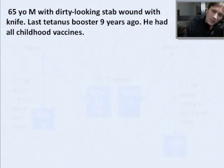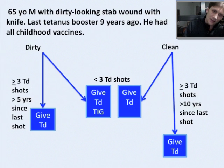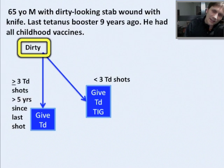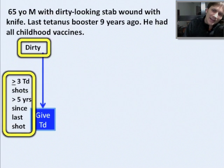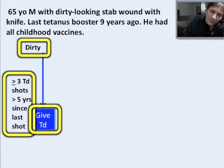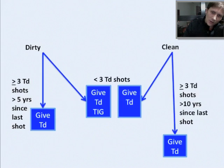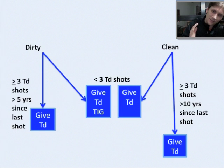One more: a 65-year-old male with a dirty-looking stab wound from a knife. His last tetanus booster was nine years ago and he had all his childhood vaccines. Clean or dirty? Yes, dirty. Three or more tetanus shots? Yes. Has it been more than five years for a dirty wound? Yes, it has. So this man needs a tetanus booster. He does not need the tetanus immunoglobulin — because he's had all three of the tetanus shots in his lifetime. So that's simple, right?